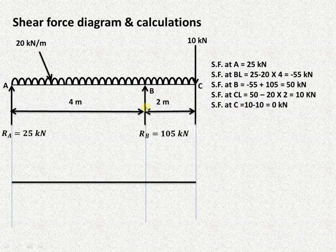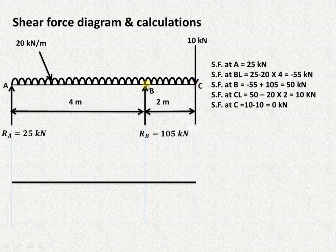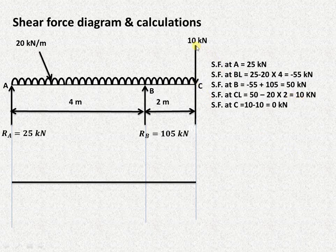Shear force exactly at B includes the upward reaction of 105 kilonewtons, so minus 55 plus 105 equals 50 kilonewtons. For shear force just to the left of C, we consider the UDL from B to C over 2 meters, so 50 minus 20 into 2 equals 50 minus 40 equal to 10 kilonewtons. Exactly at C there is a downward point load of 10 kilonewtons, so 10 minus 10 equals 0.